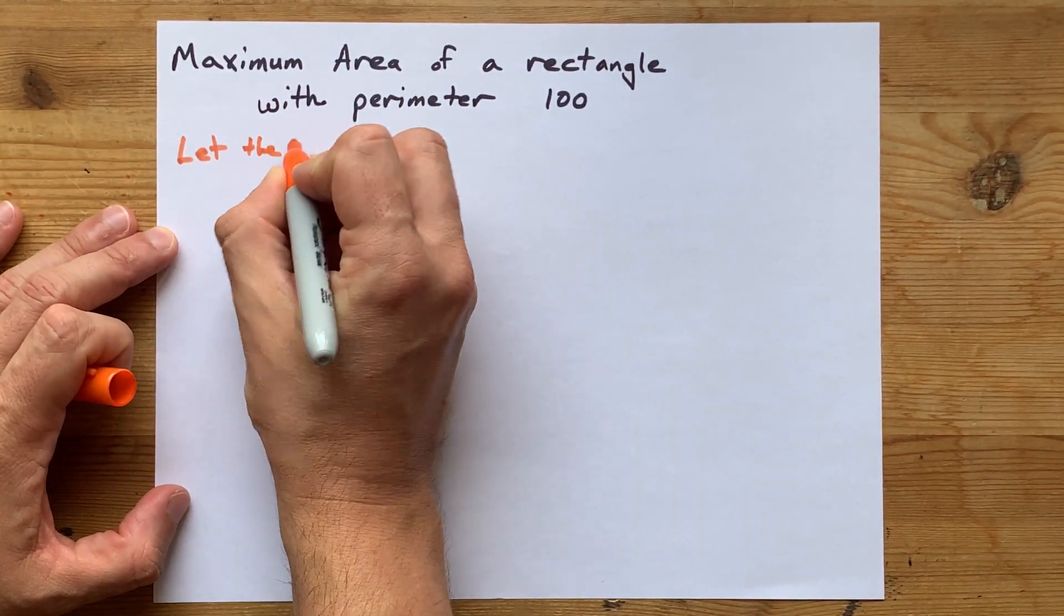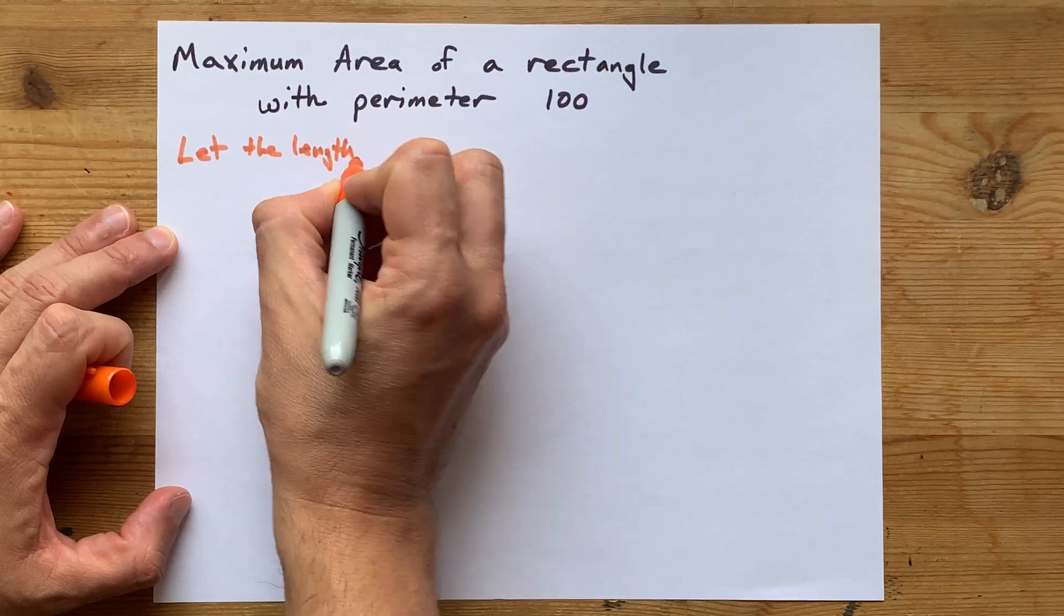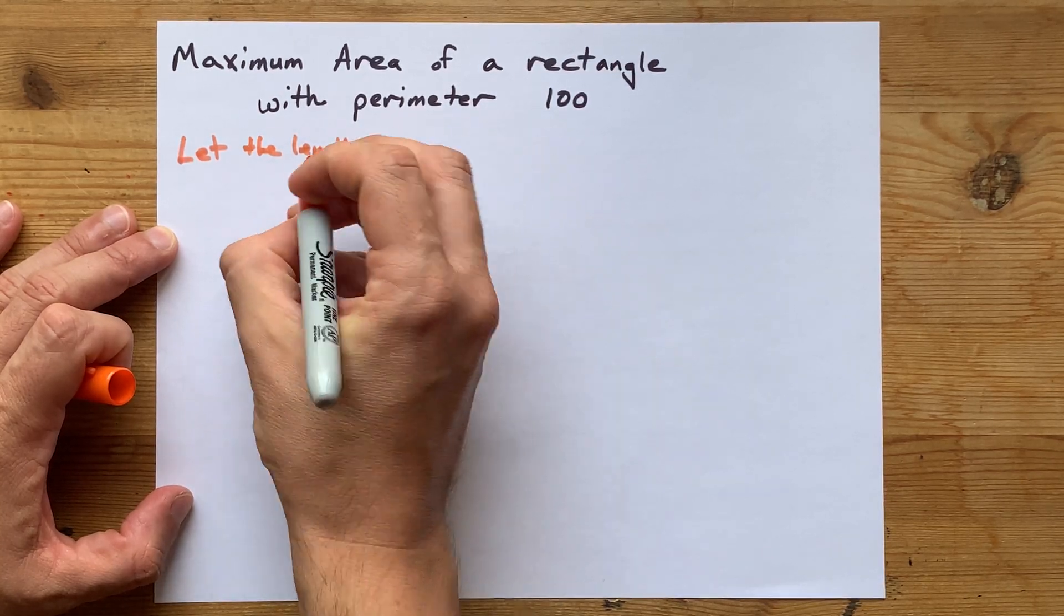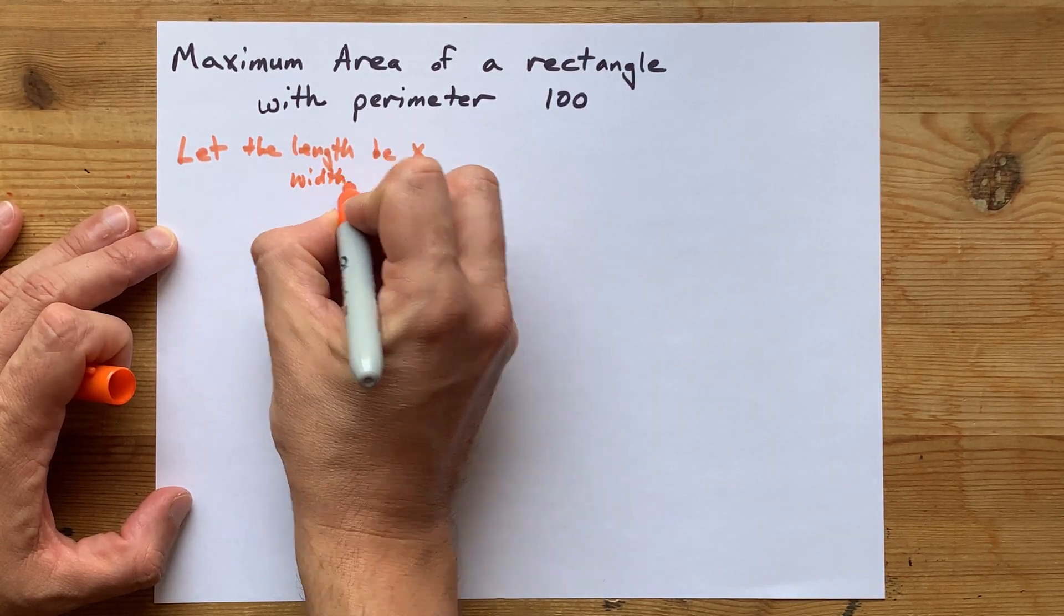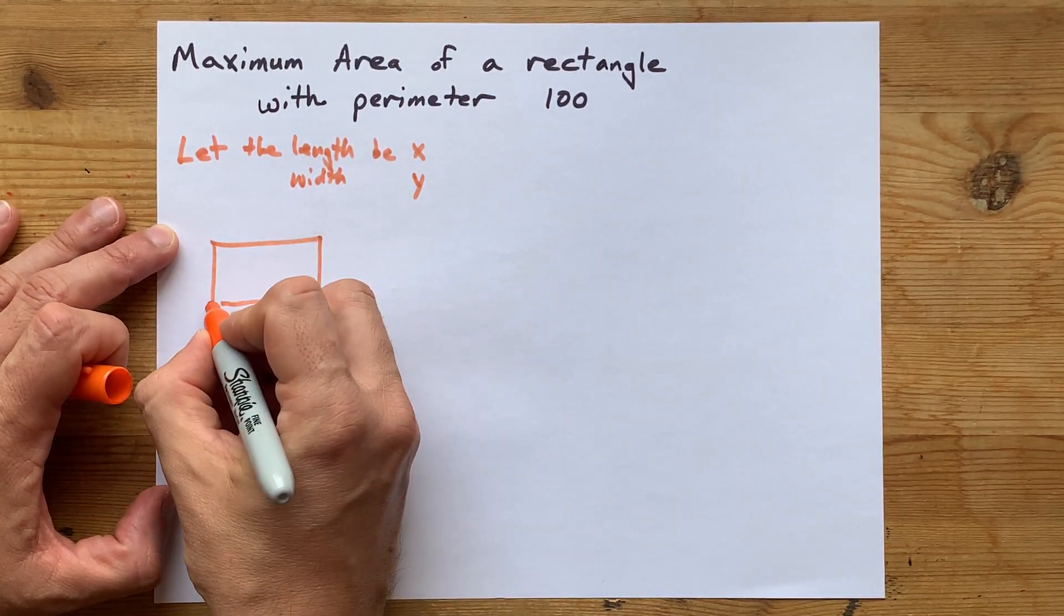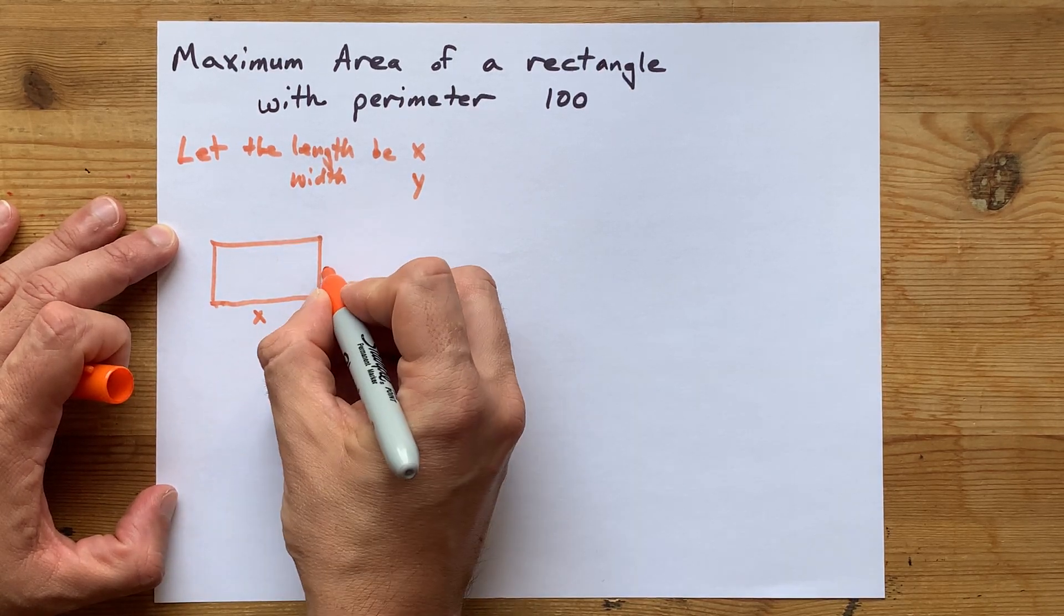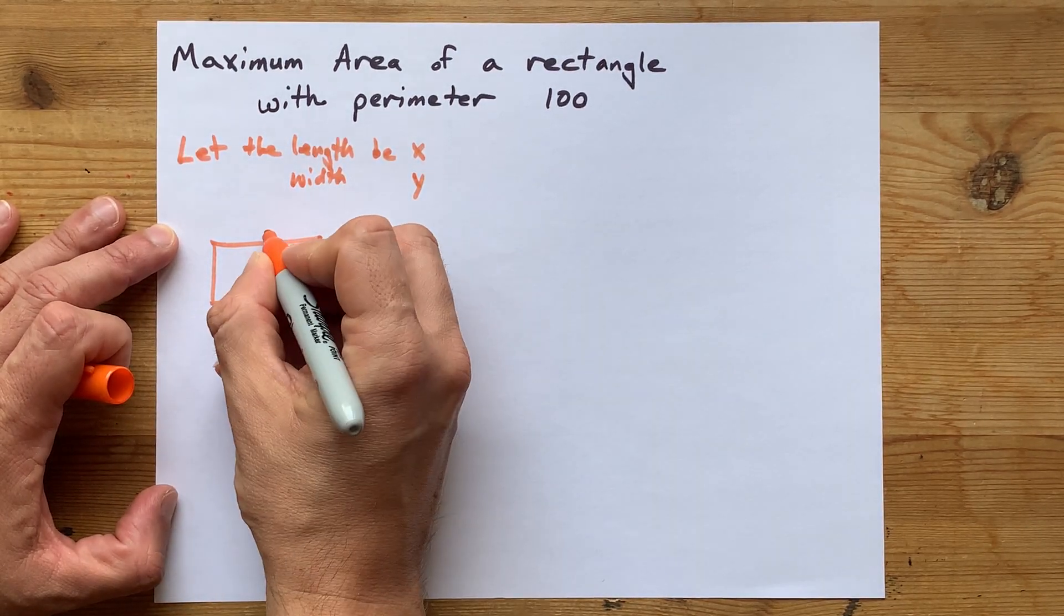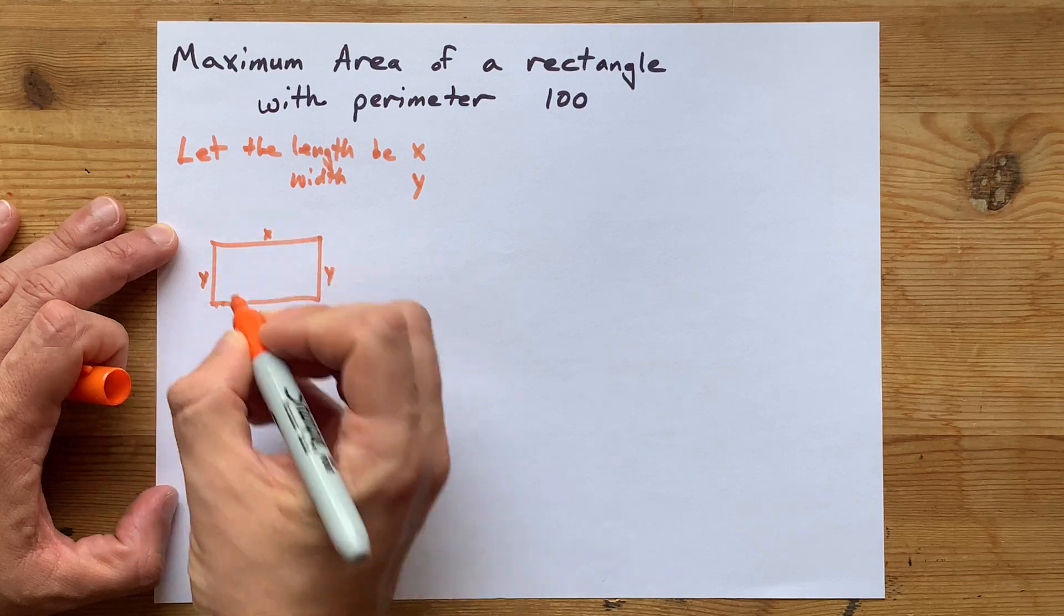First, let the length of the rectangle be x, and then we'll let the width of the rectangle be y. That means we have a rectangle, and it is x wide and y tall. Now, that means the other side here is x, and the other side here is y.